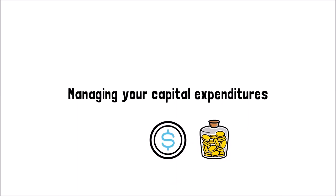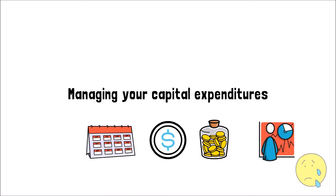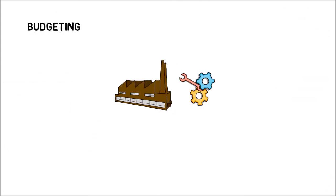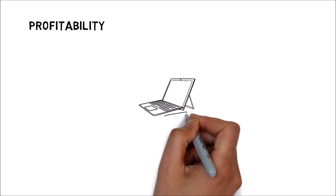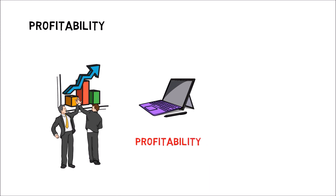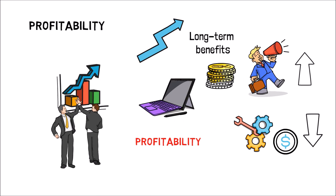When managing your capital expenditures, keep in mind that upfront costs are significant but benefits come over many years, making assessment difficult. Before making any high-cost investment, consider budgeting first — establish the maximum amount you can spend and determine asset scope and funding availability. Also consider profitability: while businesses invest in technology and equipment to increase productivity and efficiency, the ultimate goal is always profitability, generally achieved through increased sales or decreased operating expenses.